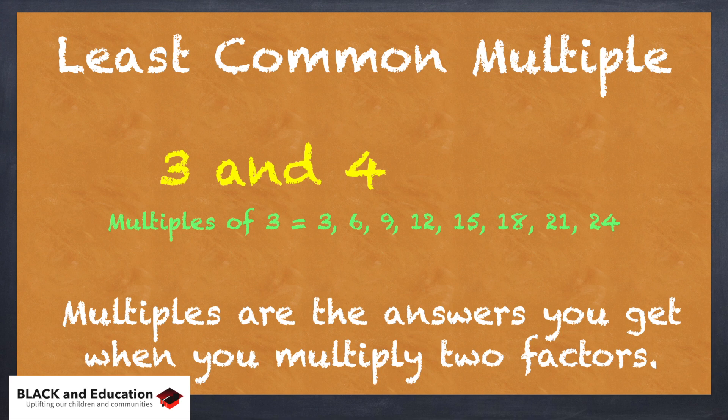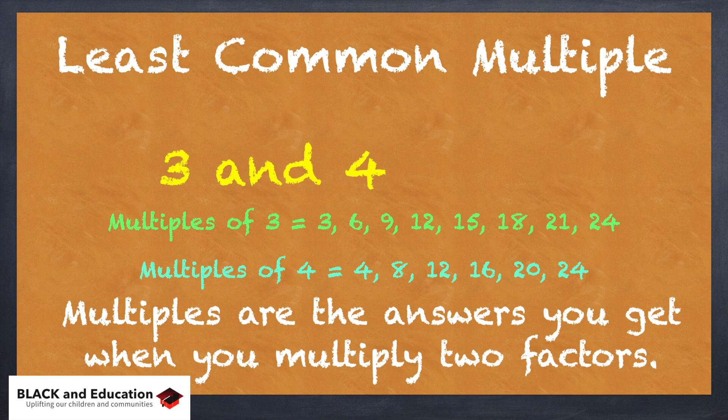These are the multiples of 3 where 3 is a factor of these numbers. And I look at multiples of 4, I know that 4 times 1 is 4, 4 times 2 is 8, 4 times 3 is 12. These are the multiples of 4 when 4 is a factor, as we kind of just start out multiplying 4.